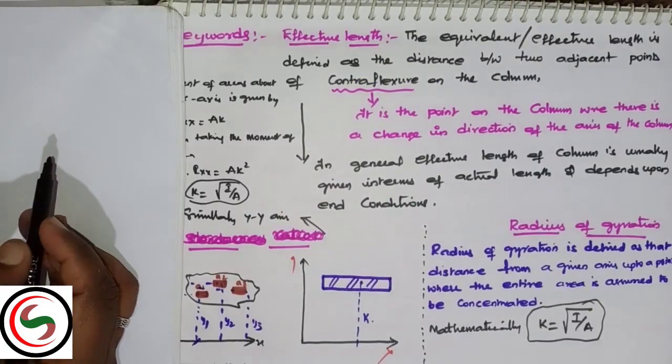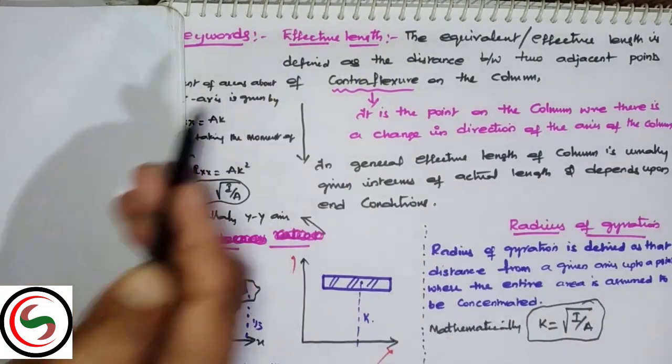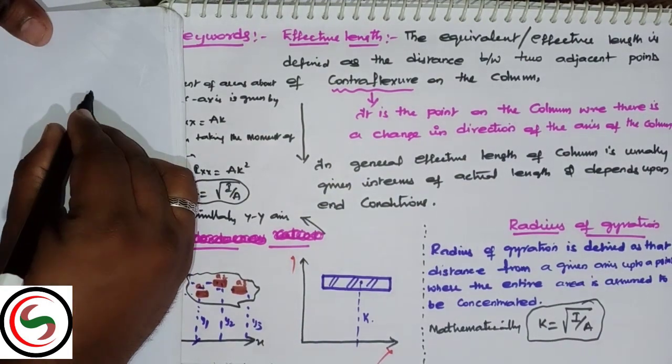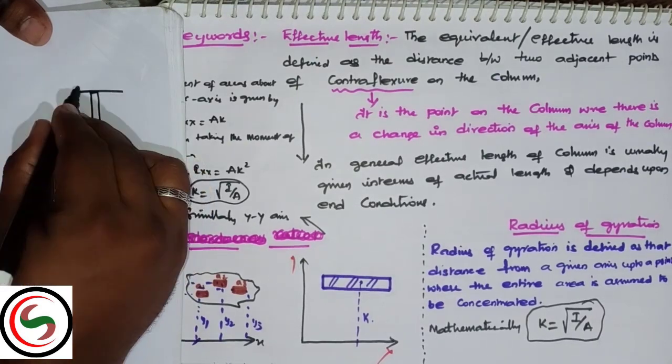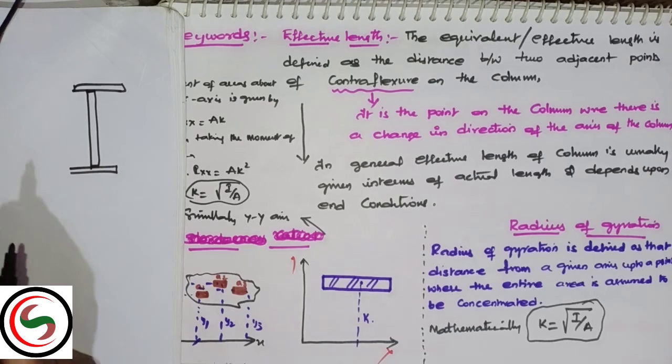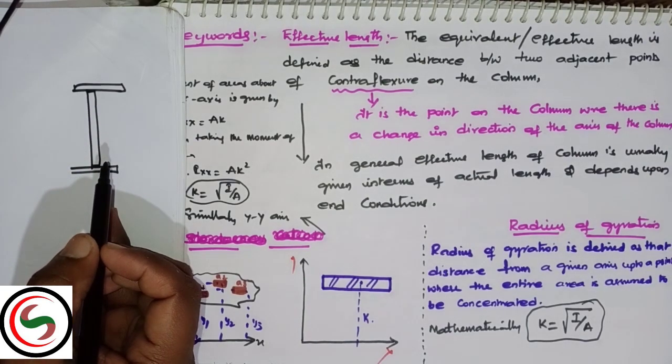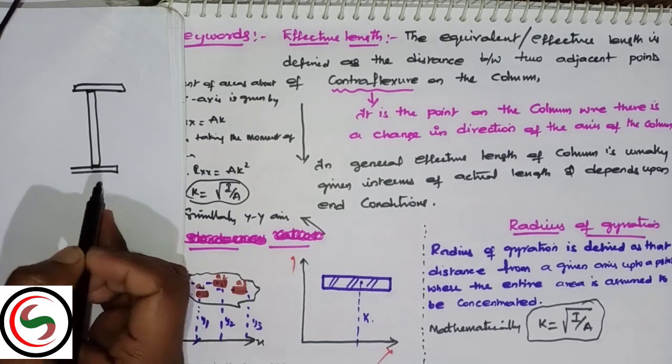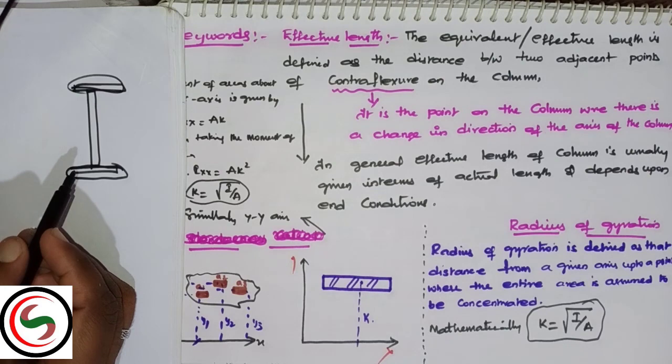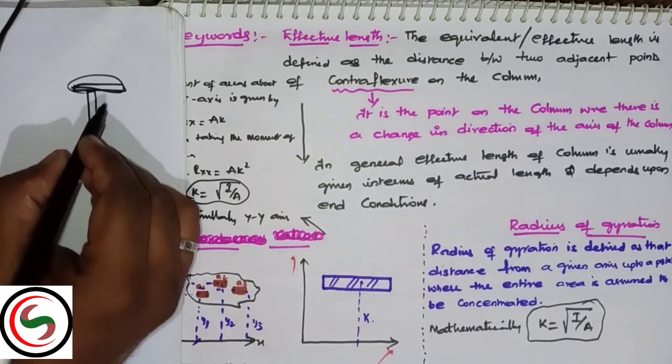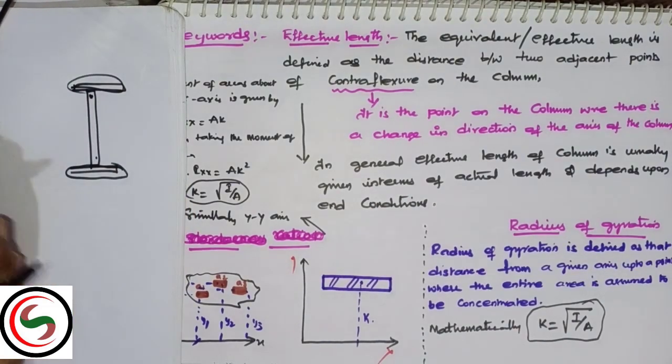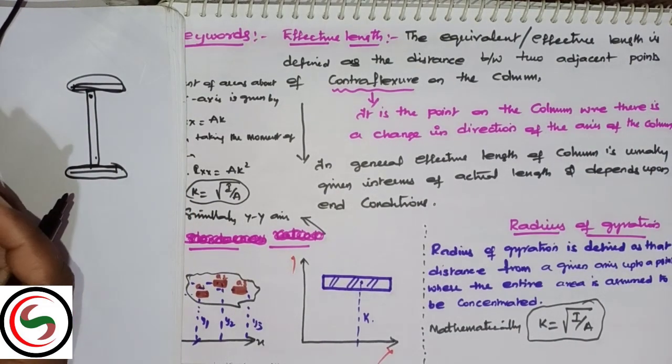Next, for effective length: suppose a column could have fixed end conditions. The effective length is defined as the distance between two adjacent points of contraflexure on the column. So bending starts at points of contraflexure.